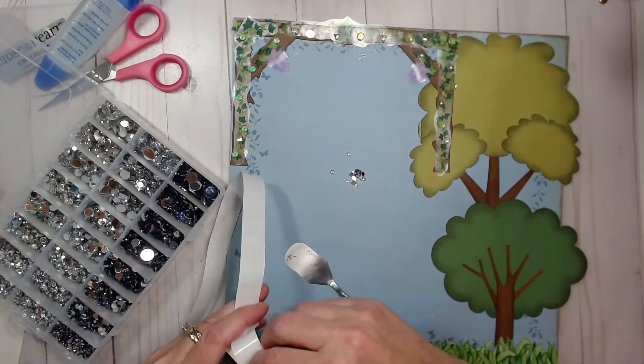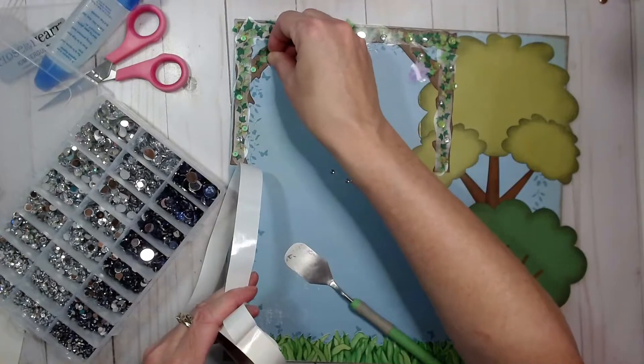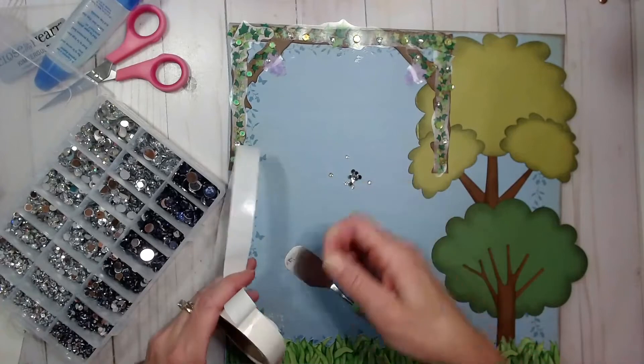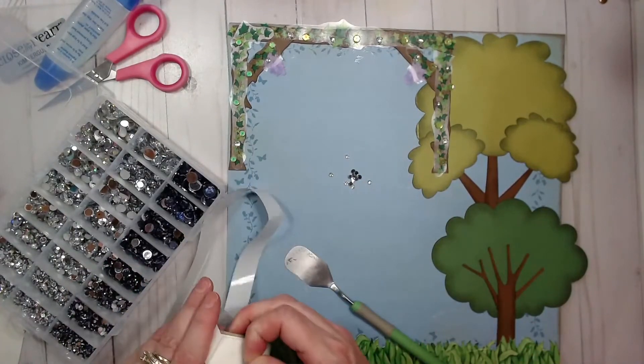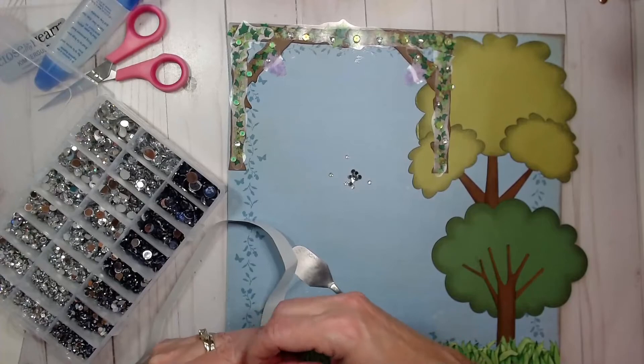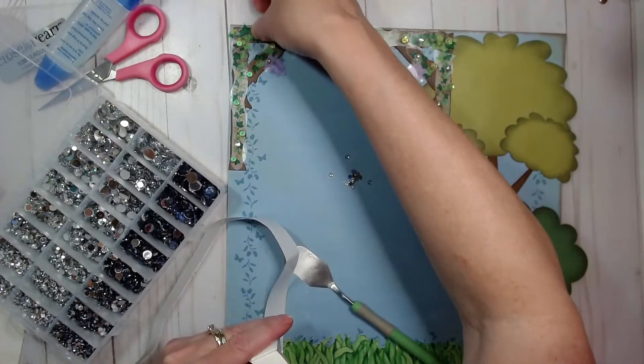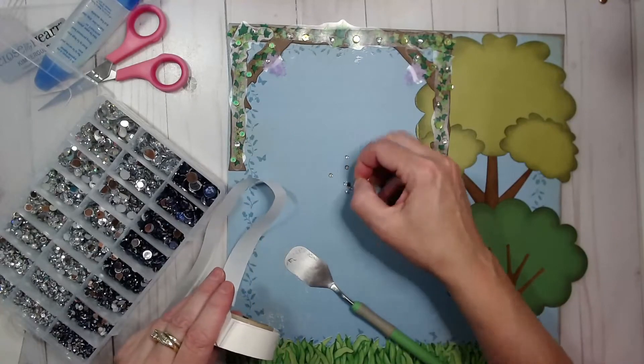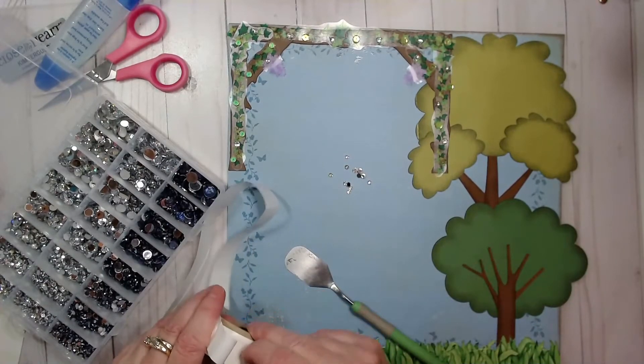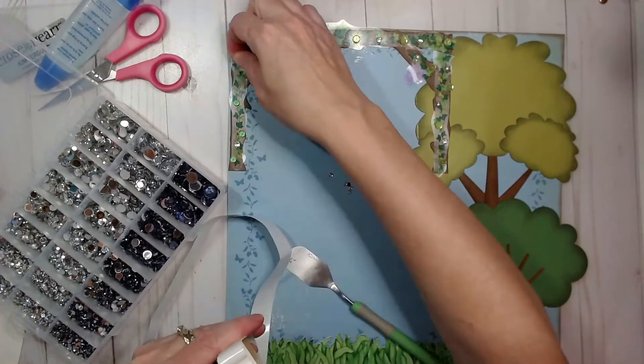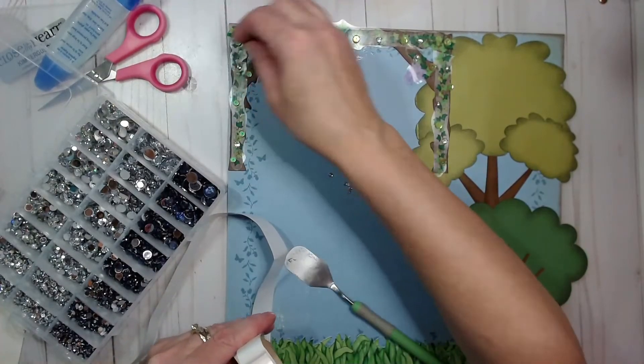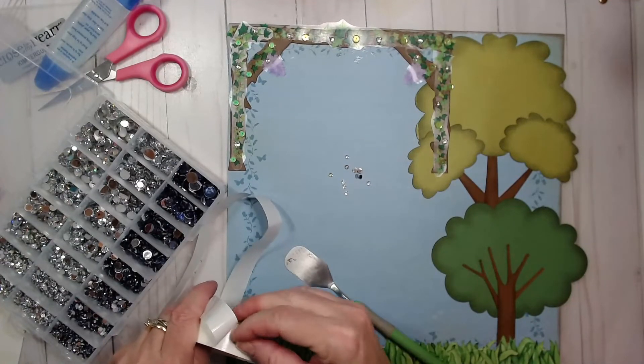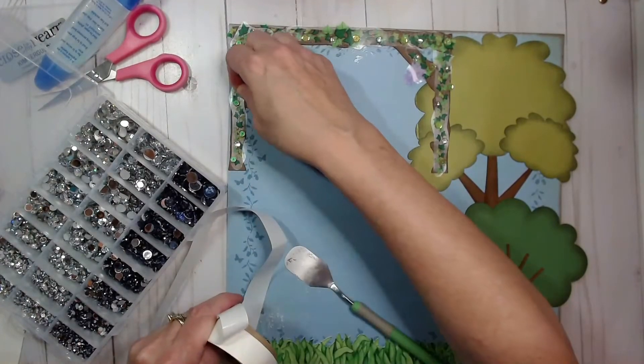I'm getting some glue dots used up because I don't know how long I've had these either. There's that worry that things are gonna dry up and not be good anymore. Like those stickers I used for the Mother's Day breakfast, those were really hard to get off of their backing because they were so stuck to the sheet, not to the layout. You want them to stick to your layout but not come off their backing.